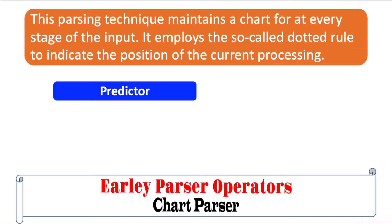The predictor operator creates new states representing top-down expectations generated during the parsing process. Predictor is applied to any state that has a non-terminal immediately to the right of its dot, which is not a part-of-speech category. One new state for every alternative expansion of a non-terminal will be created. The productions are already existing in the grammar, and the same chart entry as the generating state will hold these new states.